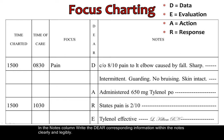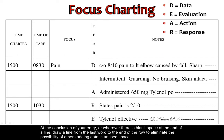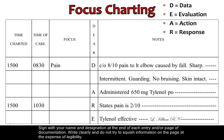In the notes column, write the DEAR corresponding information clearly and legibly. At the conclusion of your entry, or whenever there is a blank space at the end of a line, draw a line from the last word to the end of the row to eliminate the possibility of others adding data in the unused space. Sign with your name and designation at the end of each entry and/or page of documentation. Write clearly and do not try to squish information onto the page at the expense of legibility.